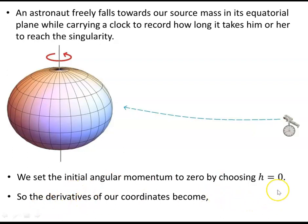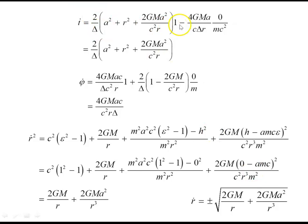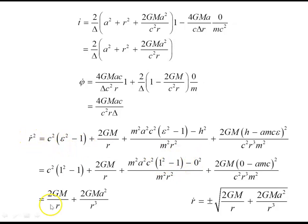The derivatives of the coordinates now become simplified: where h appeared we put zero, and epsilon is set to one. So r dot squared simplifies accordingly, and r dot is plus or minus the square root of that expression — negative indicating inward motion. Of course, the astronaut will acquire angular momentum as they fall towards the source mass in the equatorial plane, but this approximation simplifies the task.